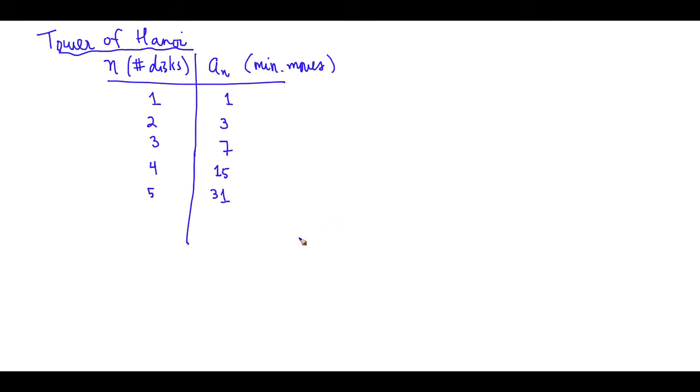So what we want to do now is to find if there is a pattern between n and a sub n. n is the number of disks in the Tower of Hanoi game and a sub n is the minimum number of moves necessary to solve the game. And we can see that there is a bit of a pattern emerging here.